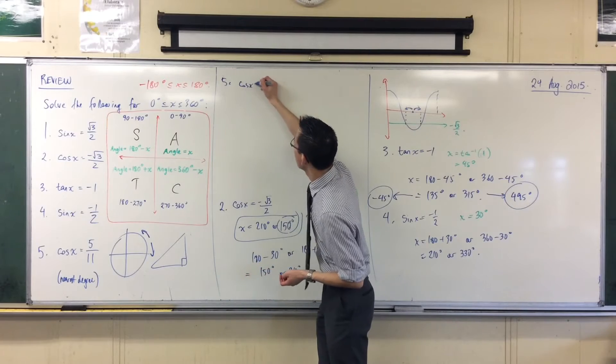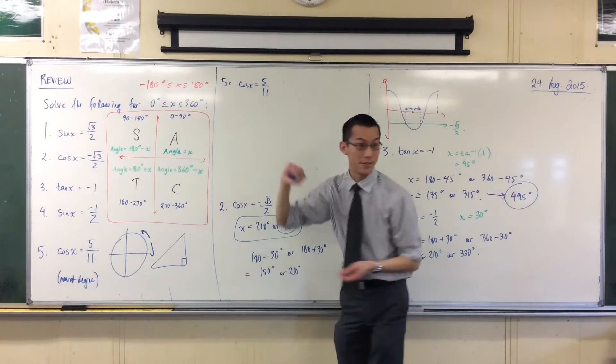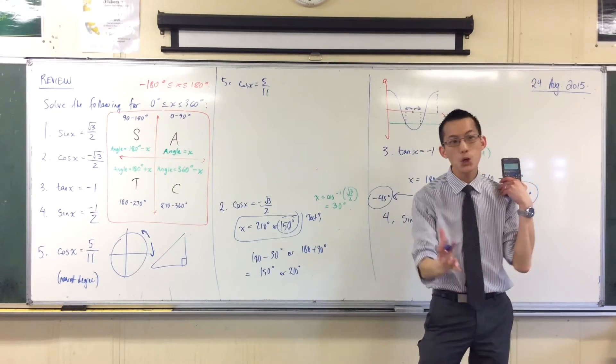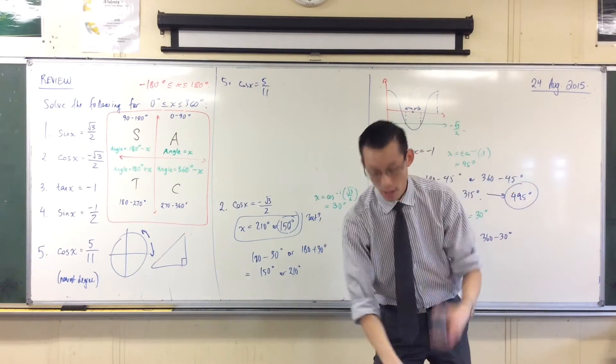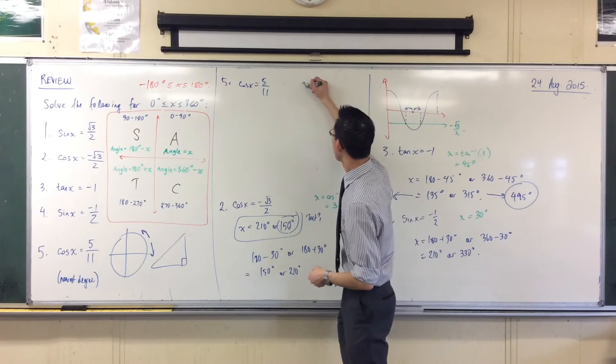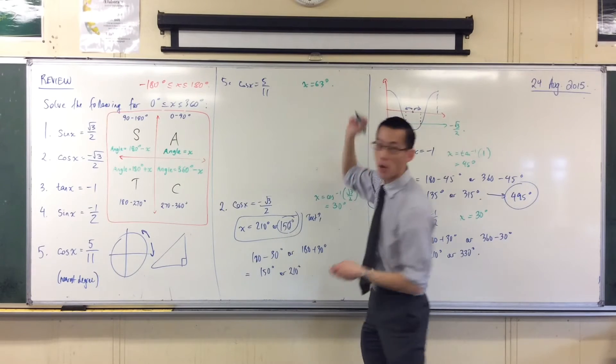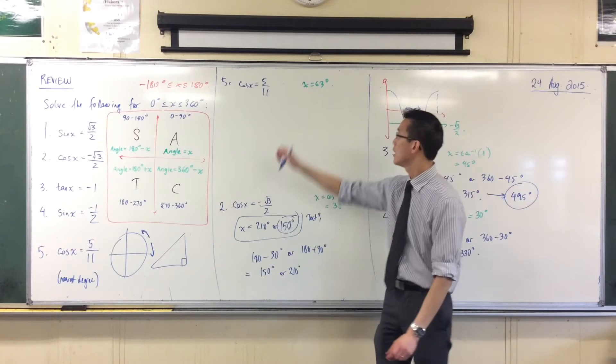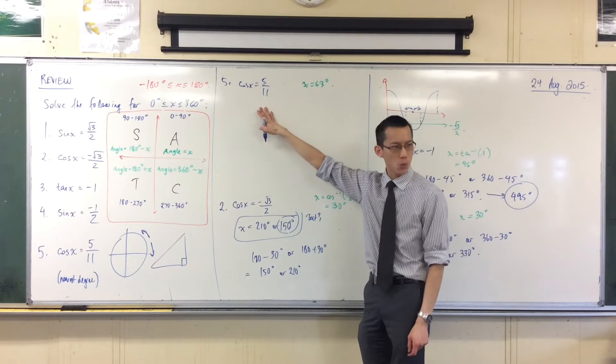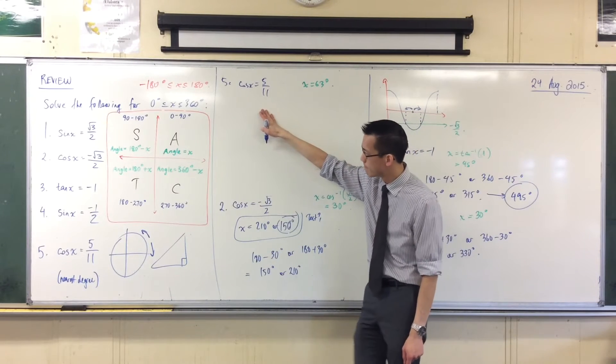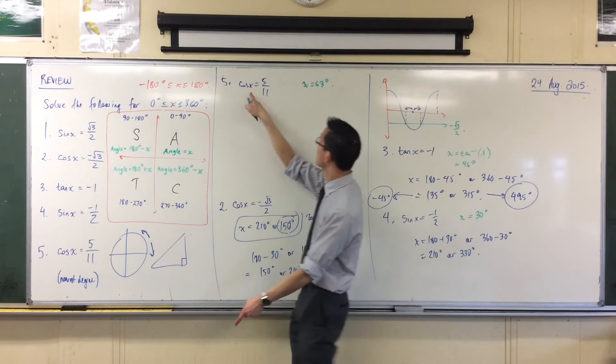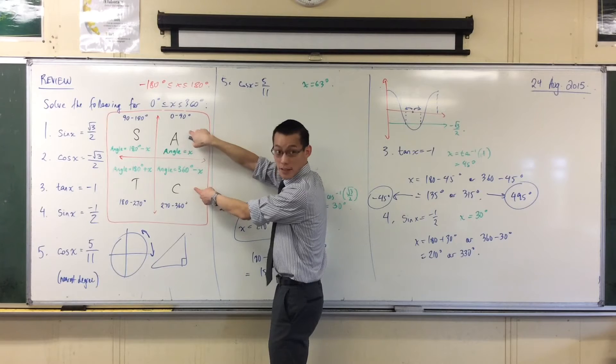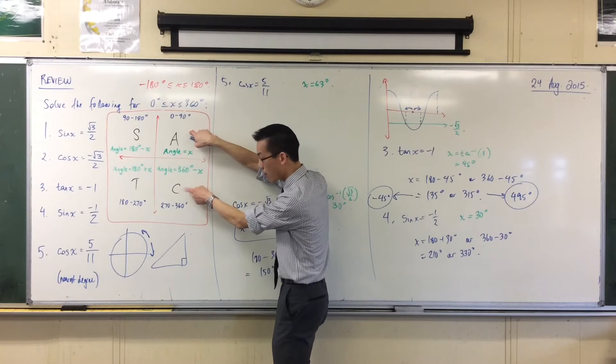Last question, 5. If cos x equals 5 over 11, we're definitely going to need our calculators for this. So, what acute angle to the nearest degree are you getting? 63. So x equals 63. So, what do I do with 63? Cos is supposed to be positive. So, which quadrants am I interested in? Positive, right? So, I think it's going to be first and fourth, yeah? Because all of them are positive here. And cos is positive here.